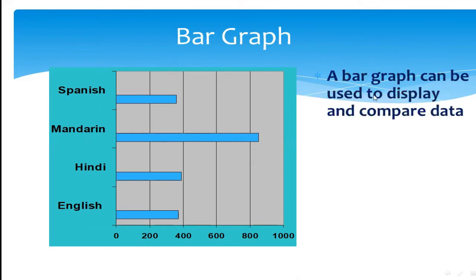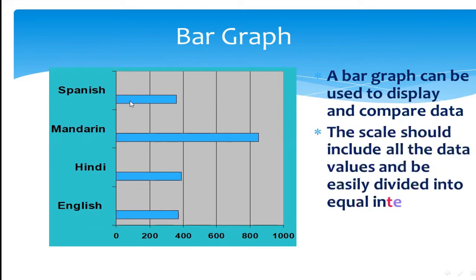A bar graph can be used to display and compare data. We are comparing the data of English and Hindi. The scale should include all the data values and be easily divided into equal intervals. You can see the equal intervals are divided — on the horizontal axis, values like 200, 400, 600 are written.